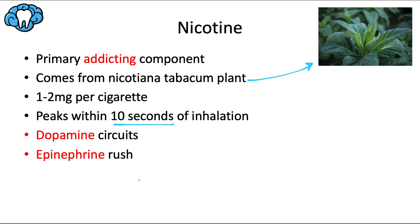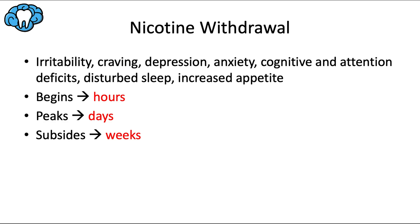Nicotine activates the endogenous reward system of the brain, primarily through dopamine circuits. This is the same mechanism of action for other addicting drugs like opioids, alcohol, and cocaine, as we talked about in our substance abuse video. Nicotine use increases the levels of dopamine in the reward circuits, so the brain craves more of that dopamine, which is satisfied by more nicotine use, and so the cycle continues. Nicotine also stimulates the adrenal glands to release epinephrine, which causes an increase in heart rate, blood pressure, and respiration rate.